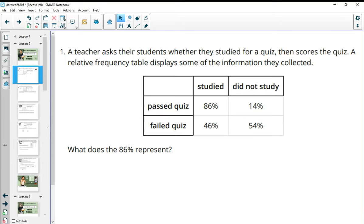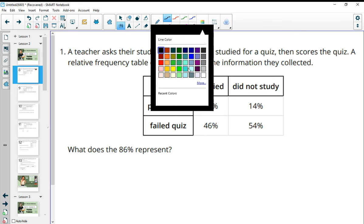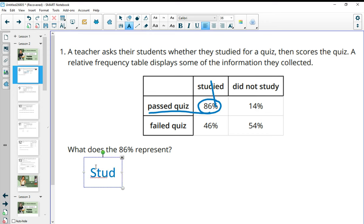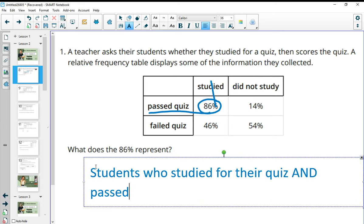Number one, a teacher asks their students whether they studied for a quiz, then scores the quiz. A relative frequency table displays some of the information that they collected. What does the 86 represent? So we've got the 86 here. This is people who passed the quiz and who studied. So that's where those two boxes meet. So students who studied for their quiz and passed the quiz.